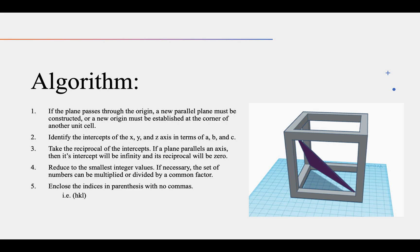Fourth step is to reduce the reciprocal to the smallest integer value, meaning no fractions. So if necessary, all the numbers can be multiplied by a common factor to get a whole number, and if these numbers can be reduced, you can divide by a common factor, but the set of numbers must remain whole numbers. The last step is to put the set of numbers into parentheses with no commas, and as stated before, the indices are labeled h, k, and l corresponding to the x, y, and z axes.